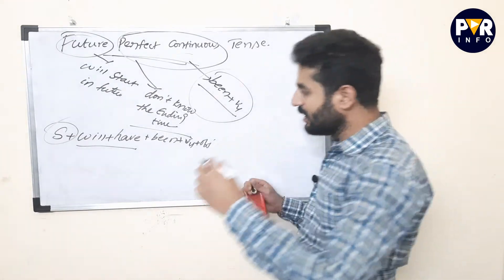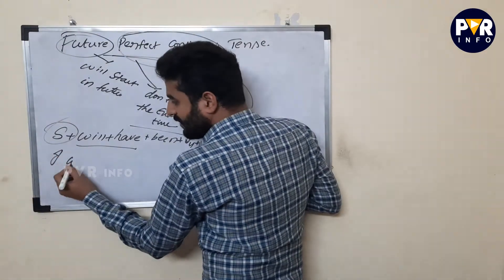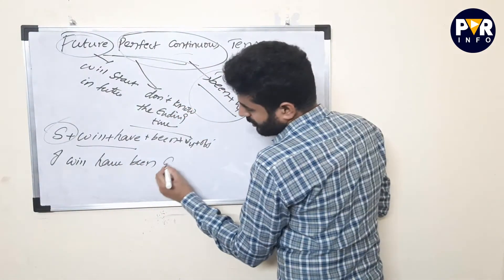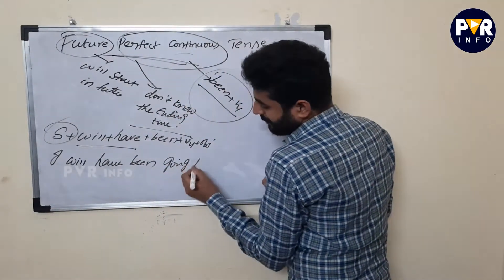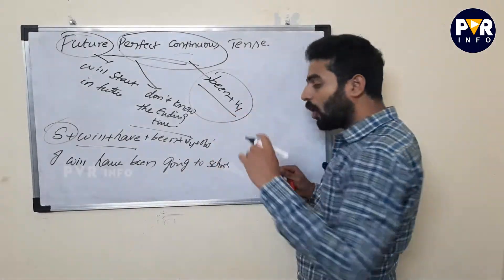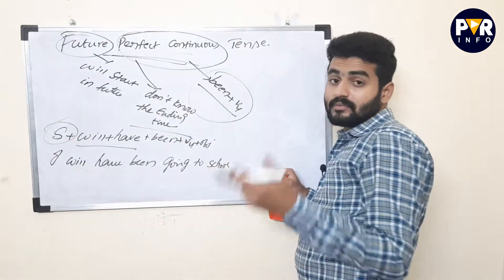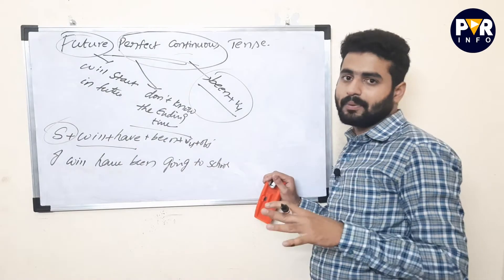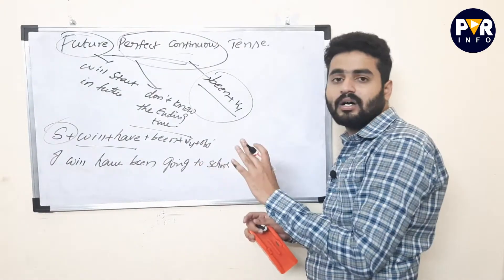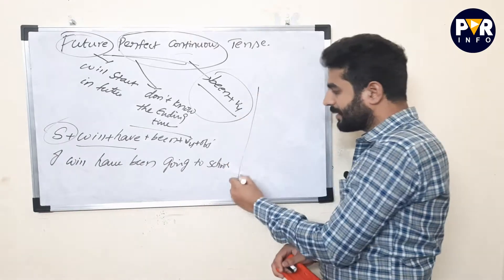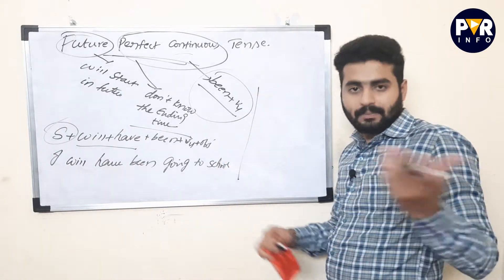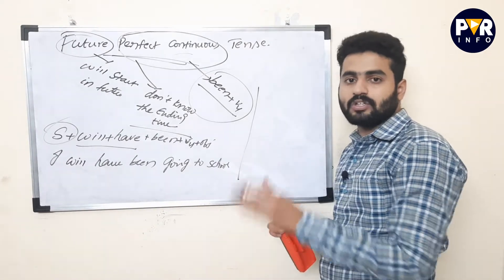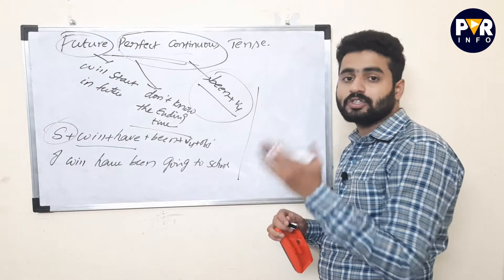For example: 'I will have been going to school.' This type of example is very easy to understand. I will have been going to school — we know when it starts but not when it ends. According to this formula, we can construct sentences in any situation.